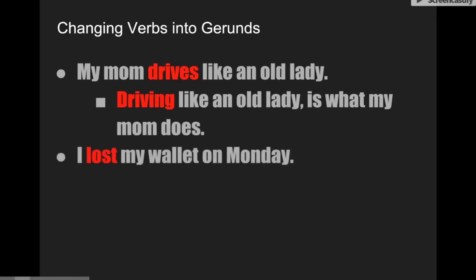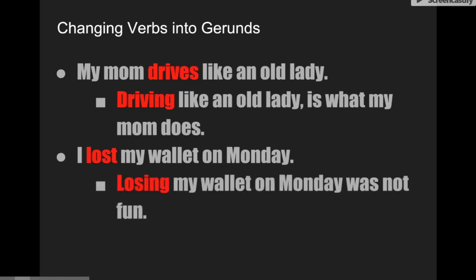'I lost my wallet on Monday.' The verb 'lost' is an irregular verb, so I can't just add 'ing' and make it 'losting.' I need to figure out what that base form is — it is 'lose.' And so: 'Losing my wallet on Monday was not fun.' Again, I'm just using the 'ing' form of this verb as a noun, and that is called a gerund. It allows me to rewrite my sentence.